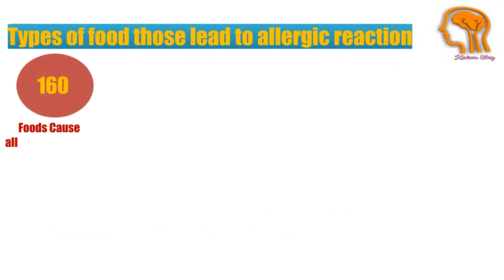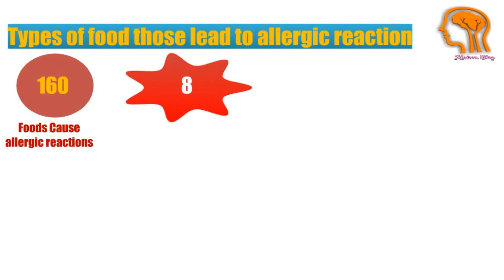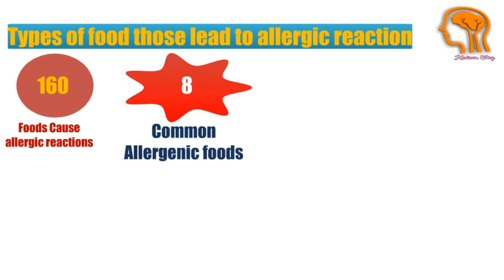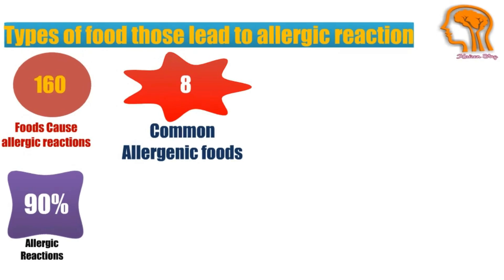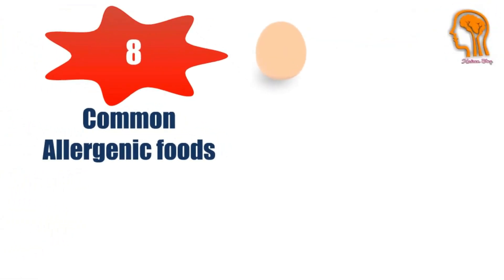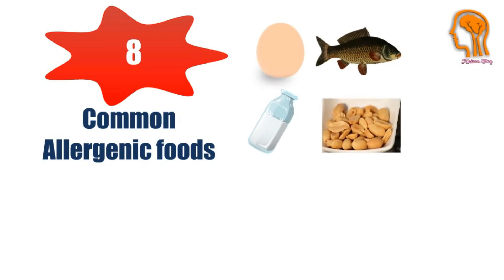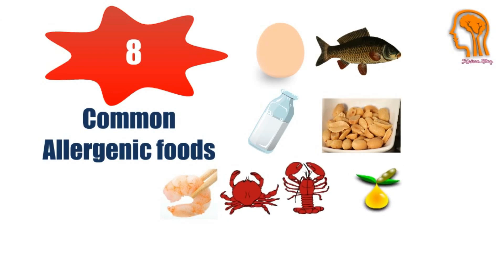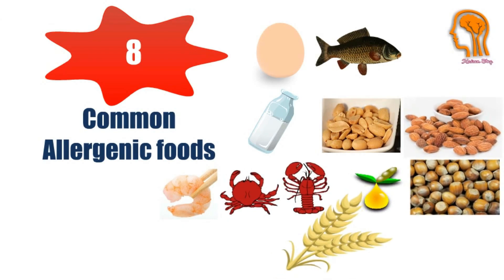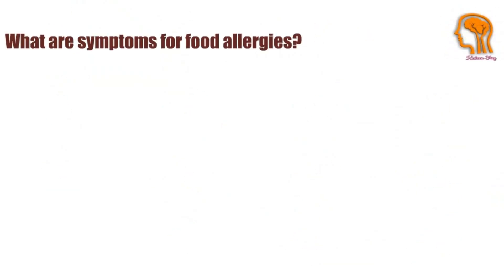There are more than 160 foods that can cause allergic reactions in people with food allergies. The law identifies the eight most common allergenic foods, which account for 90 percent of food allergic reactions. These eight foods are: eggs, fish, milk, peanuts, shellfish (such as shrimp, crab, and lobster), soy, tree nuts, and wheat.